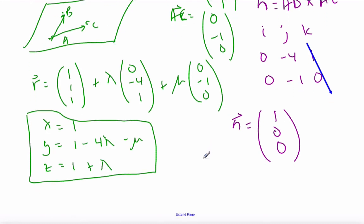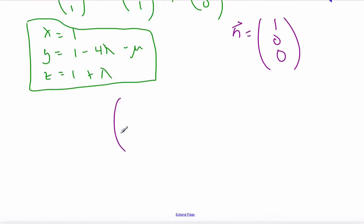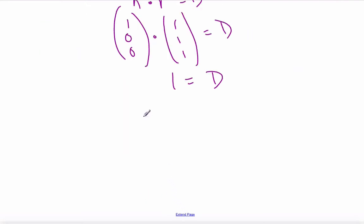The scalar product form: normal vector dot some point R equals D. So this is 1, 0, 0, dot the point 1, 1, 1, equals D. Well, if I dot product, I get 1 is equal to D. And so the scalar product form is going to be 1, 0, 0, dot X, Y, Z is equal to 1.